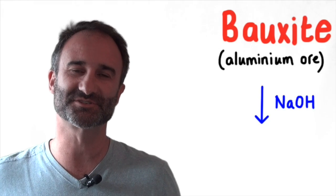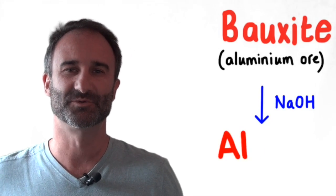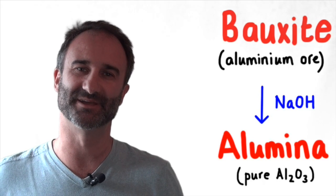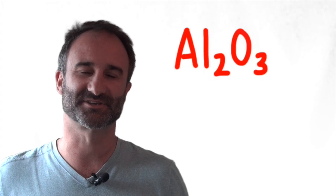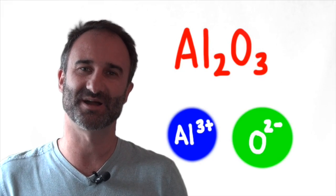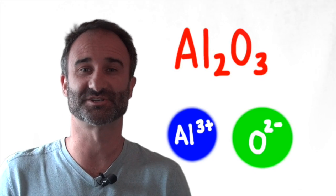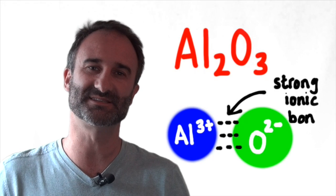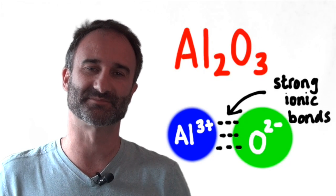The bauxite ore is treated with concentrated sodium hydroxide which produces a purified form of aluminium oxide known as alumina. The aluminium oxide has got a very high melting point. There are Al3+ ions and O2- ions, both highly charged ions which form strong ionic bonds and it requires a great deal of heat energy to melt the substance.